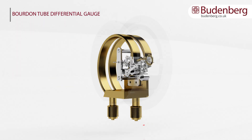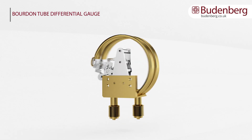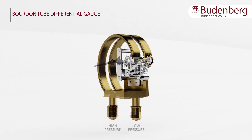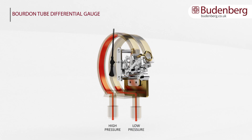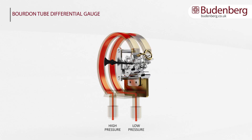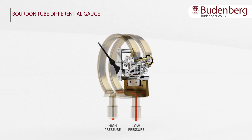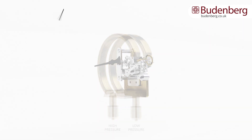The inside of a differential Bourdon pressure gauge is composed of the typical components you would expect in a pressure gauge. The main difference is that a Bourdon tube differential gauge consists of two Bourdon tubes which, when subjected to pressure, act independently measuring either the high pressure or low pressure flow.